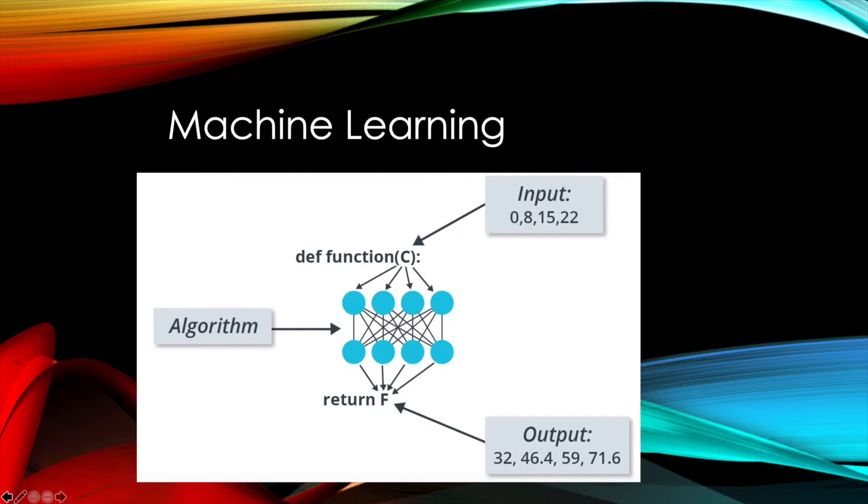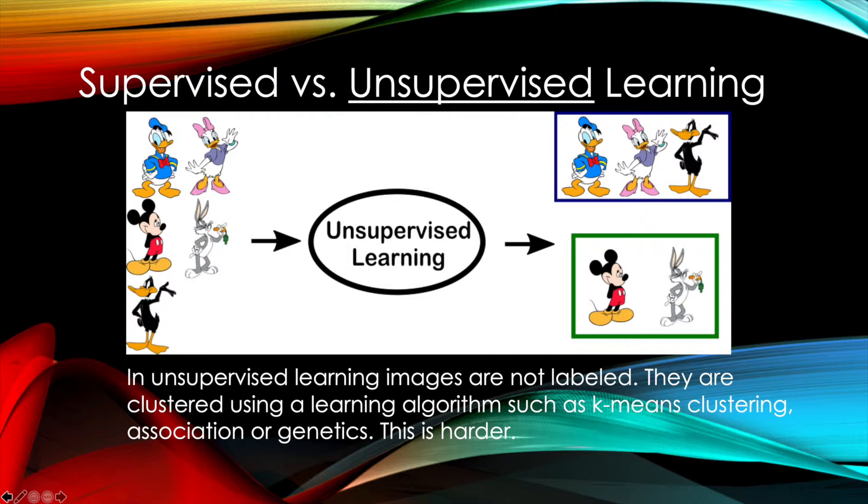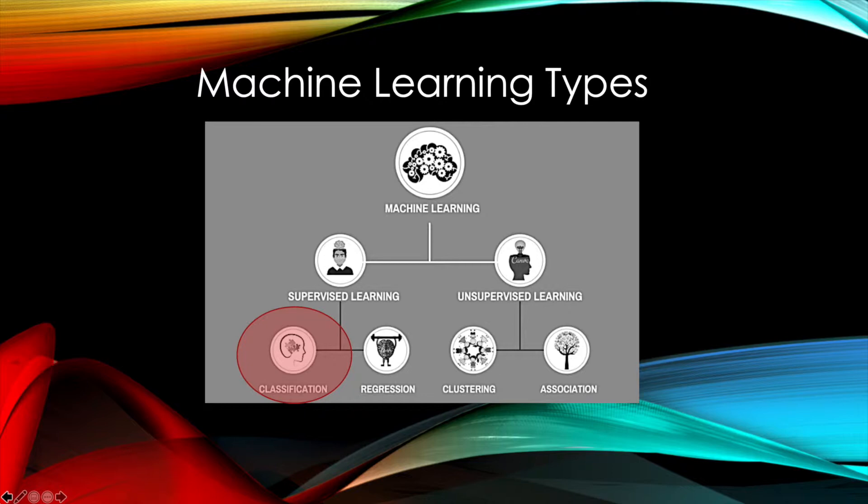Now machine learning can be divided into a couple bins. The first bin is supervised versus unsupervised learning. In supervised learning, we label the images, then we present an unknown image and ask the neural network what was the image. And so if all the neural network has seen are cats, it's not going to ever be able to tell us what a dog is. In unsupervised learning, images are not labeled. They are clustered using a learning algorithm such as k-means multiple means clustering, association, or even genetic algorithms. This is much harder, but it's also potentially more interesting. So in our taxonomy of machine learning types, we have supervised versus unsupervised. Under supervised, we have two categories that are commonly seen. One is classification that we're going to be doing here, and the other is regression. In unsupervised learning, as I mentioned, there's clustering and association, and there's quite a bit more detail in these trees.